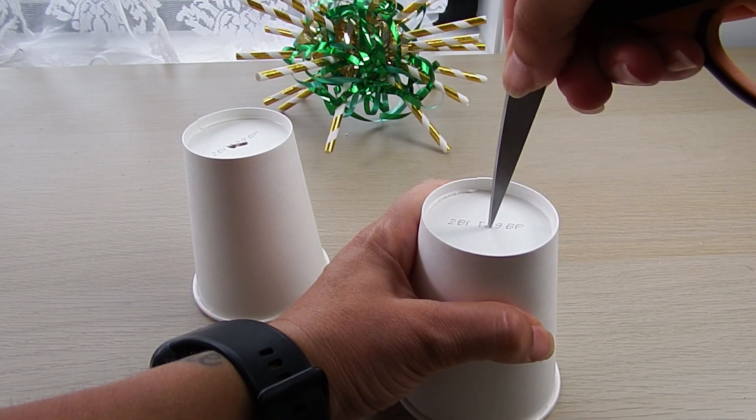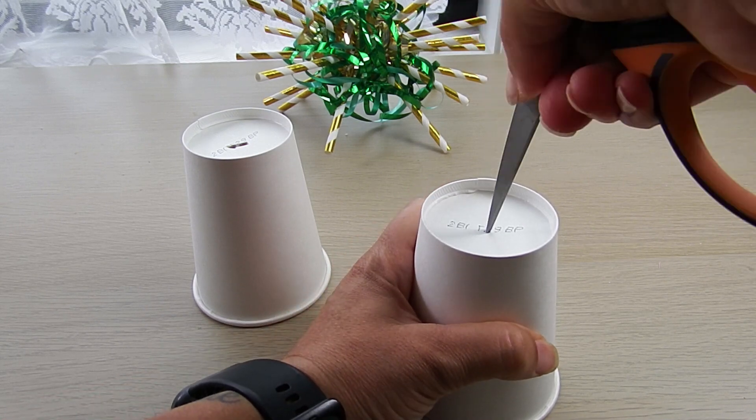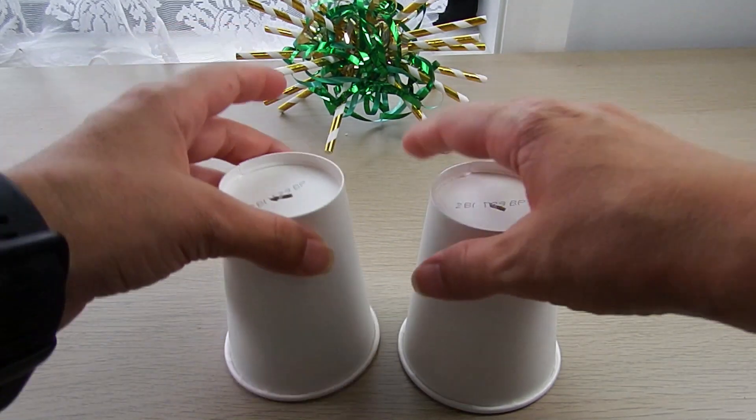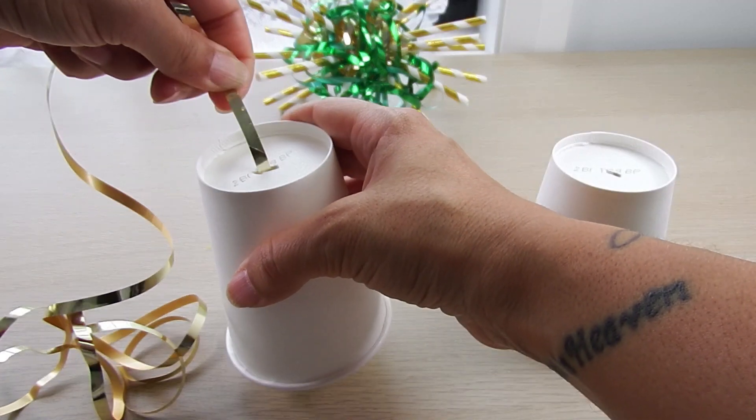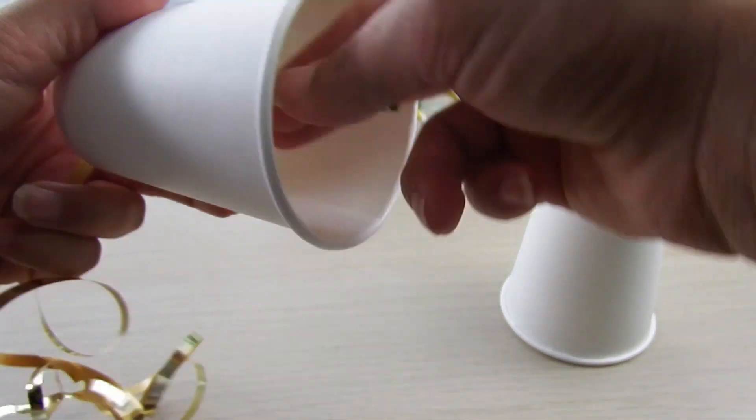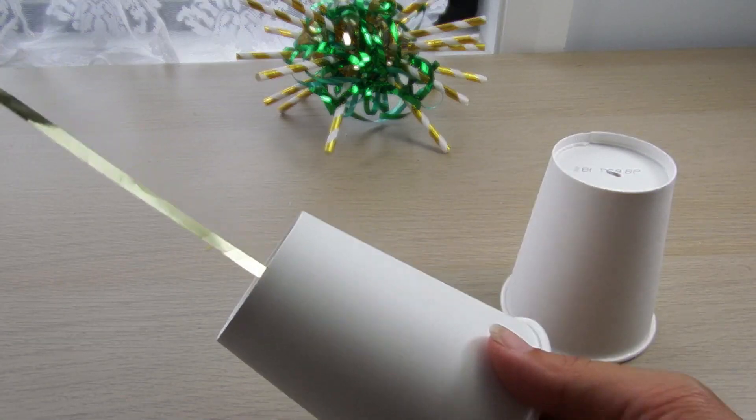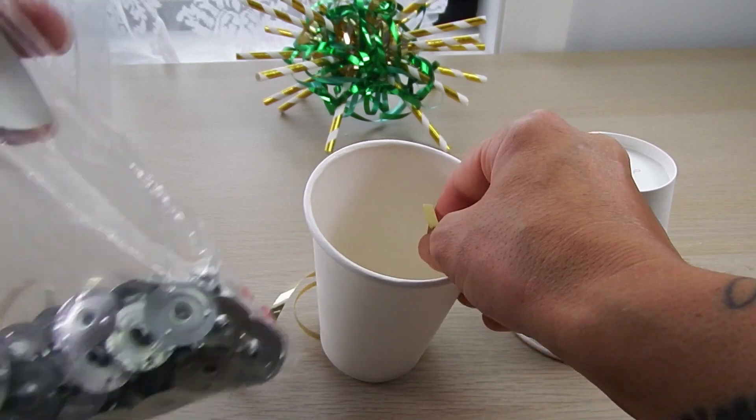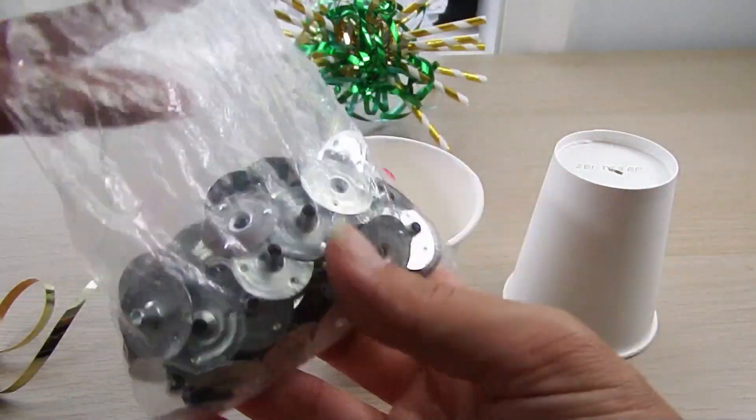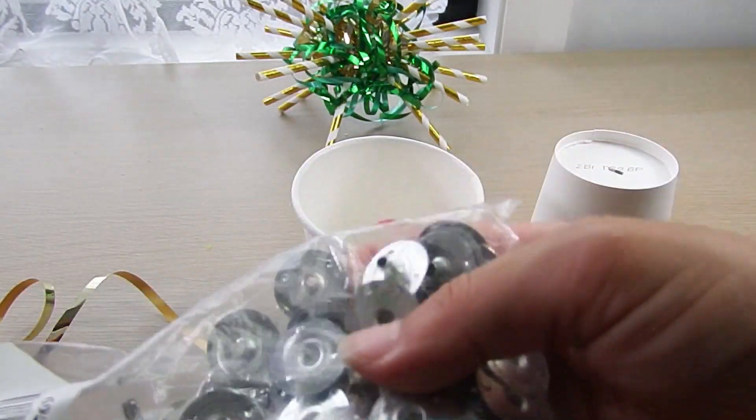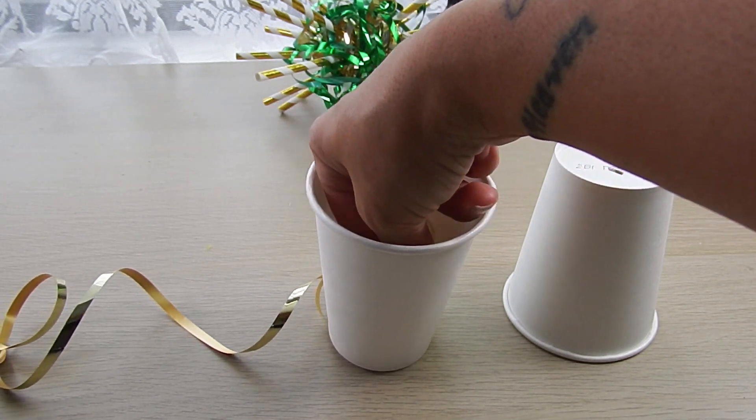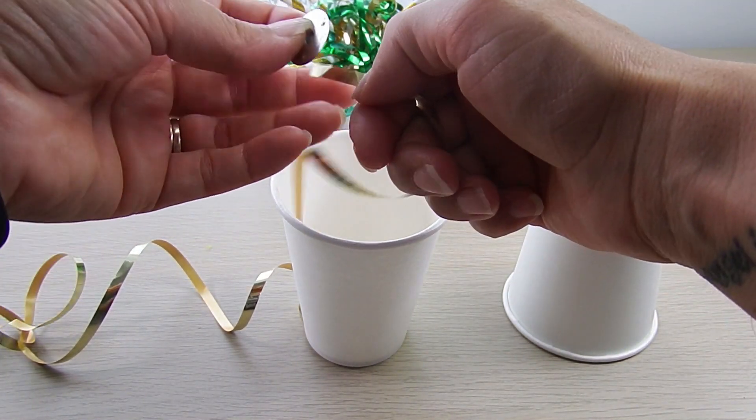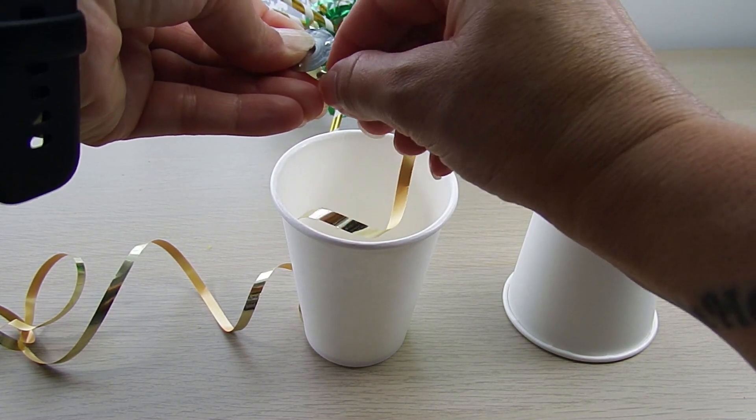The first step, as you can see, I just poke a hole with my scissors in the cups and I put the ribbon inside. I didn't have bells to be honest, so I decided I need something that just makes a little bit of noise, more for decoration.